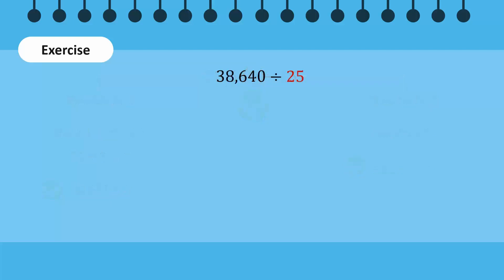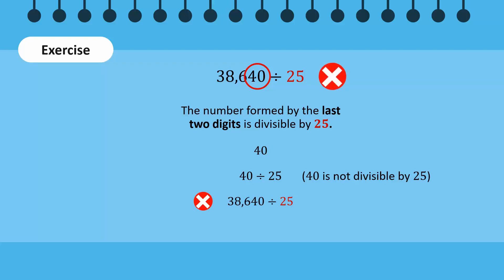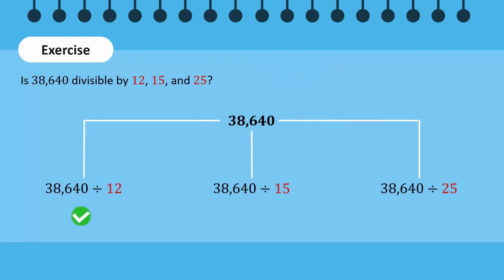Lastly, let's check if this number is divisible by 25. For 38,640 to be divisible by 25, the number formed by the last two digits, 40, must be divisible by 25. But 40 is not divisible by 25. Thus, we know that the original number is not divisible by 25 either. So this number is divisible by 12 and 15, but not by 25.